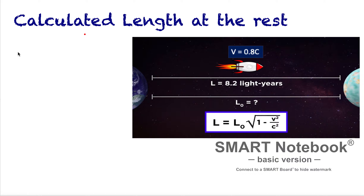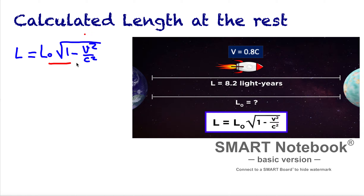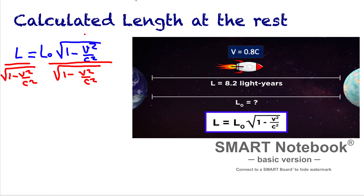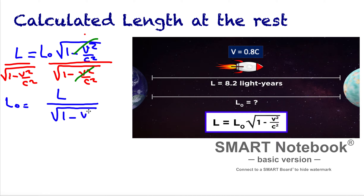We rewrite the formula as L = L0 times the square root of 1 minus v squared over c squared. To isolate L0, we divide both sides by the square root of 1 minus v squared over c squared. The two square root terms cancel, and we get L0 = L divided by the square root of 1 minus v squared over c squared.